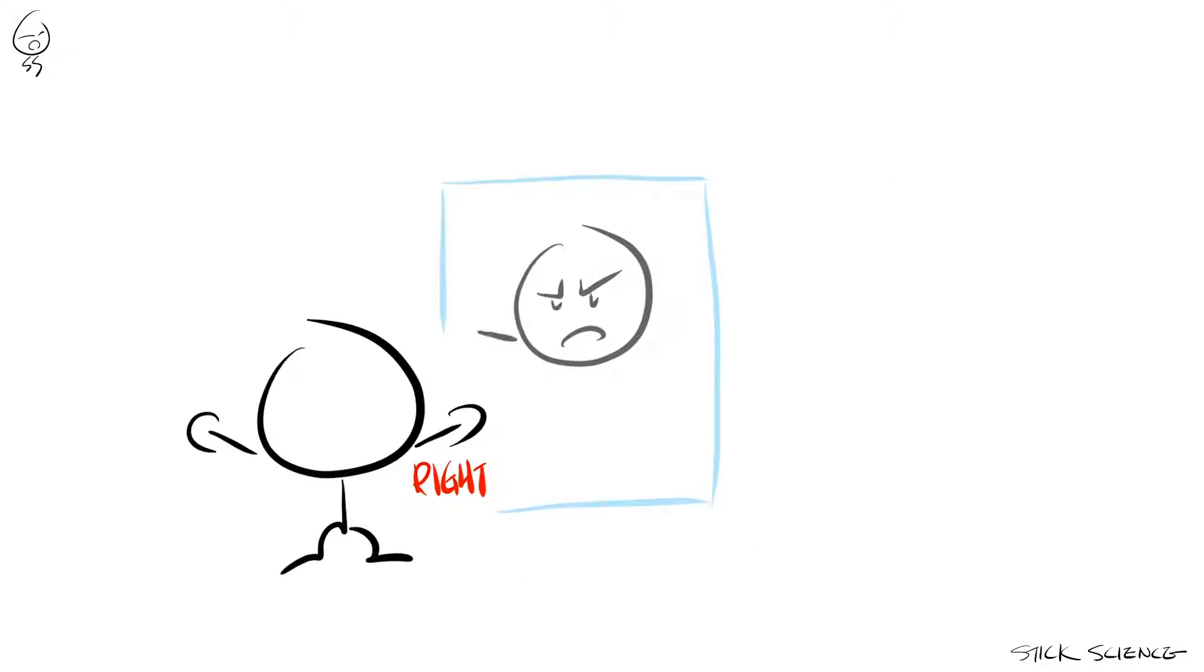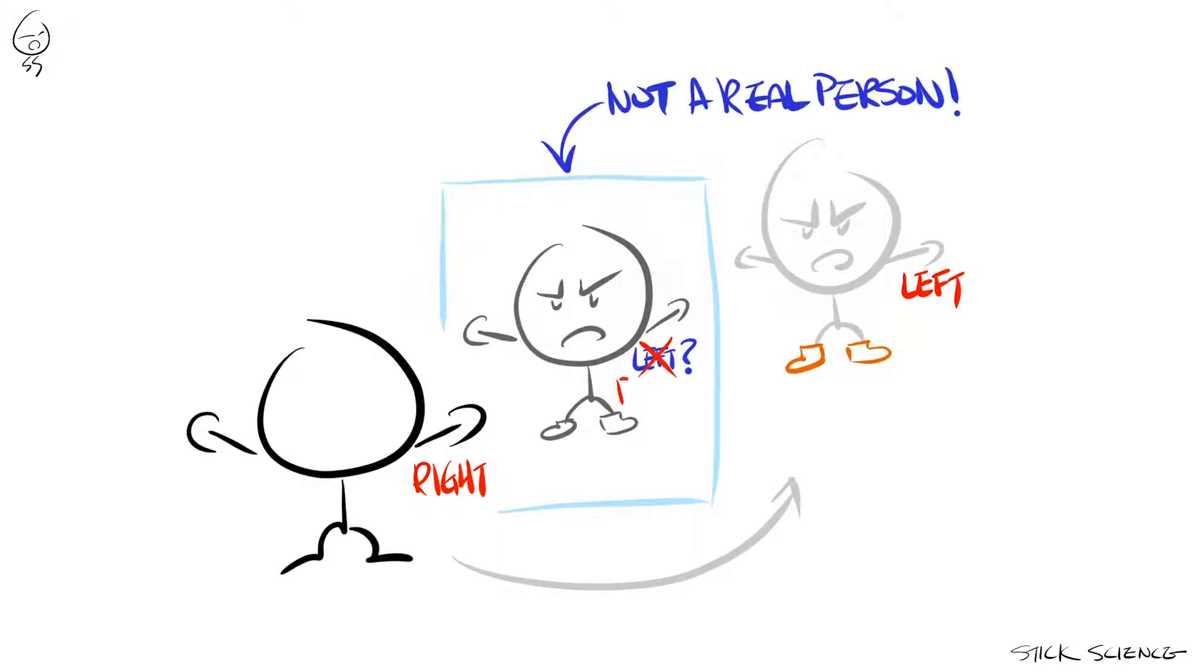When you see yourself inside a mirror, your mind tries to do the exact same thing with your mirrored image. But there's no need for this since your mirrored image isn't a real person standing in front of you.